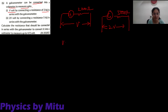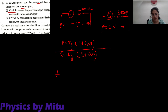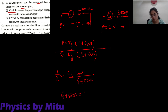The formula becomes: V is equal to IG into (G + 2000), and 2V is equal to IG into (G + 5000). Taking the ratio, 1/2 is equal to (G + 2000) upon (G + 5000). Solving: G + 5000 is equal to 2G + 4000, and G is equal to 1000 ohm.